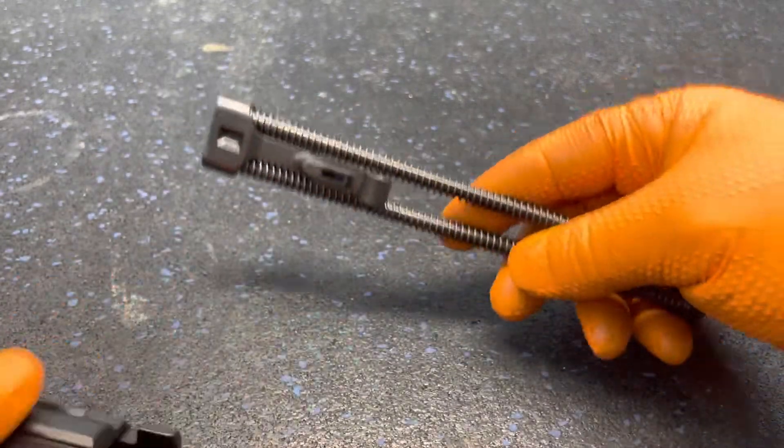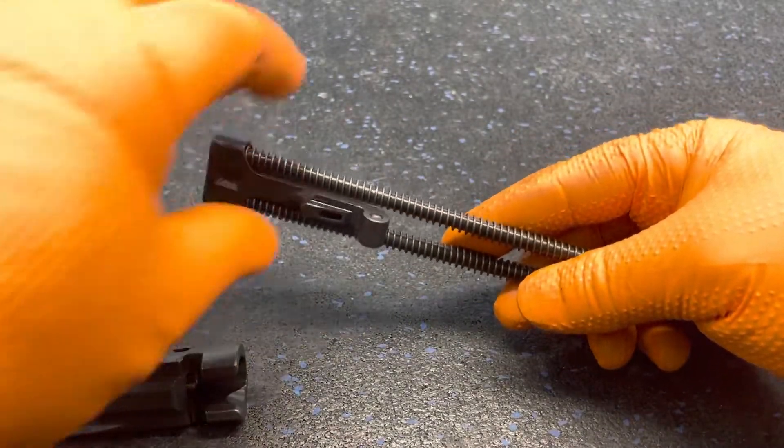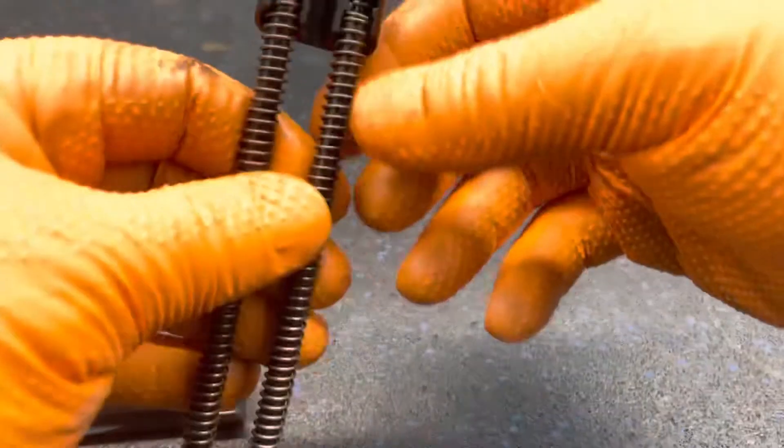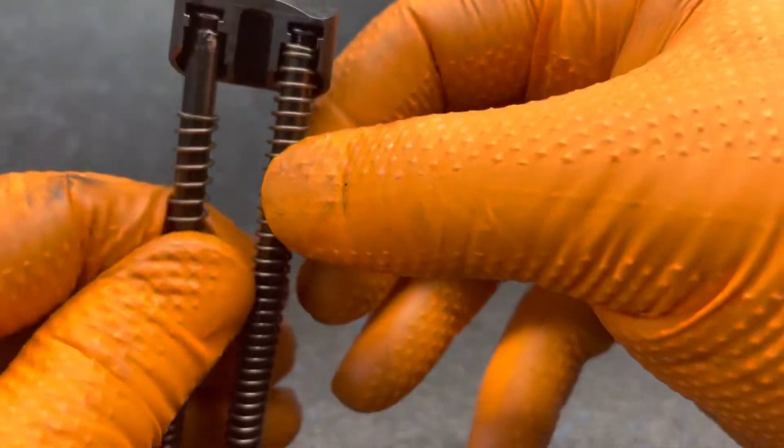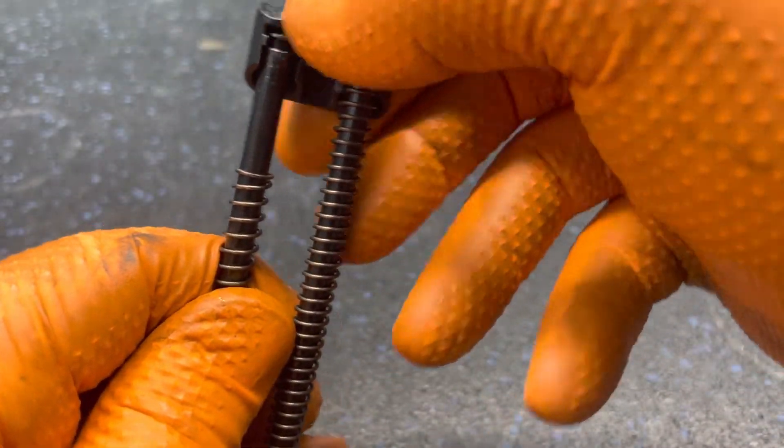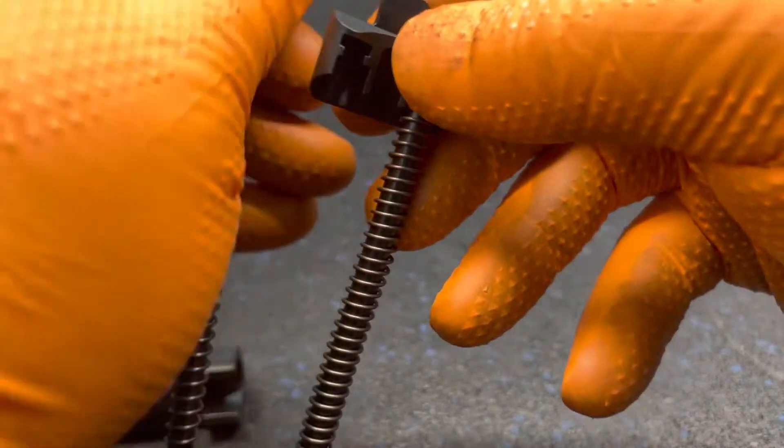You start by removing the op rod assembly from the carrier, put a little downward pressure on the recoil spring, then you can rotate the retainer.